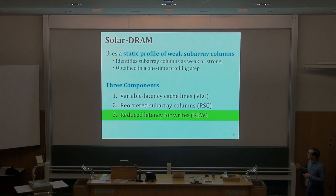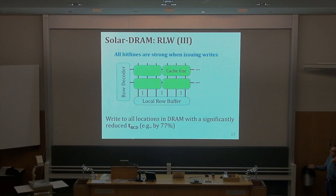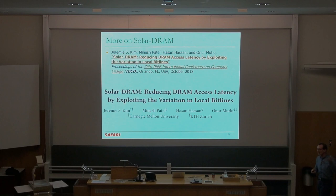The third component: whenever you're activating a row and going to issue a write, reduce tRCD by a significant amount. The paper shows that when combining all of these you gain about 10% performance improvement. If you're interested in more in this area, you can talk with Jeremy, Minesh, Hassan, and Giray.